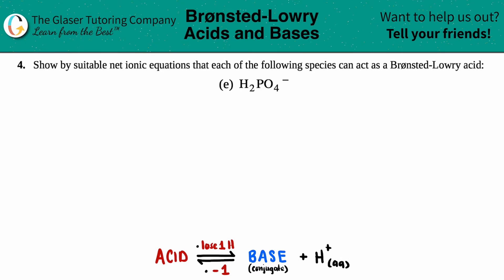Number four, show by suitable net ionic equations that each of the following species can act as a Brønsted-Lowry acid, and then we have letter E.